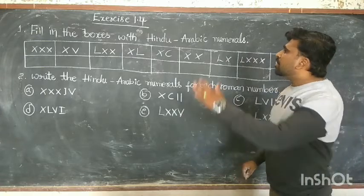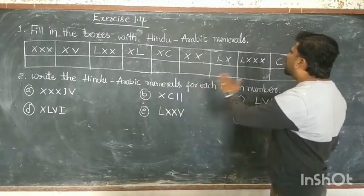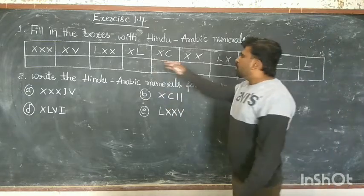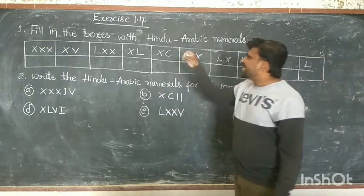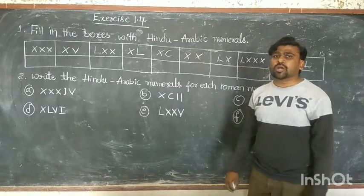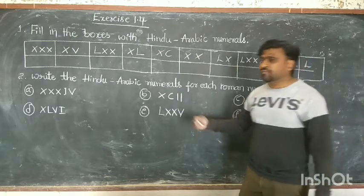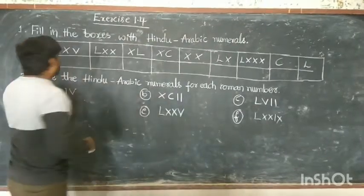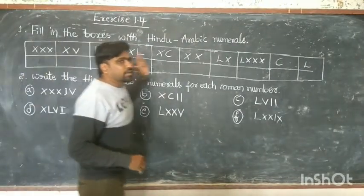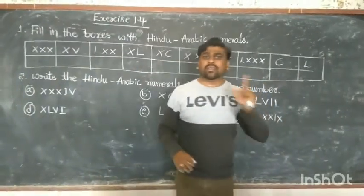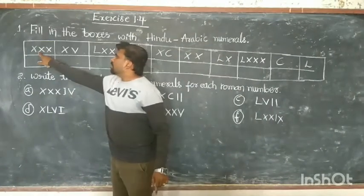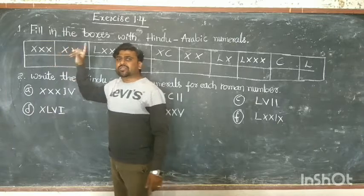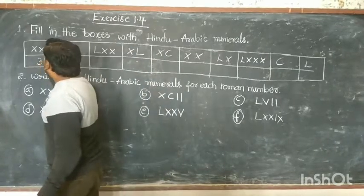They have already given the Roman numbers; you have to write the Hindu-Arabic numbers — nothing but 1, 2, 3, 4, 5, 6 — and fill in the answer. The first one: X means 10, so XXX is 10 plus 10 plus 10 — the first answer is 30.